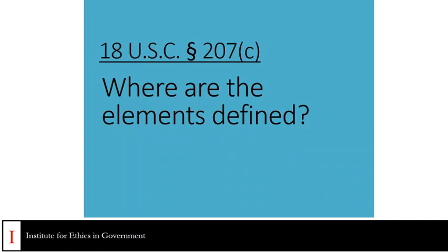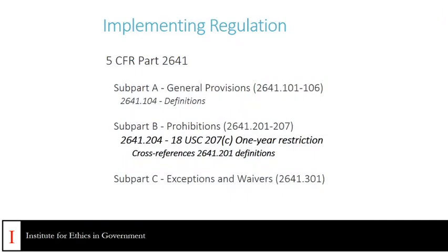Where are the 207C elements defined? The implementing regulation for 207 is 5 CFR Part 2641. The specific guidance on the application of the 207C restrictions is found at 2641.204, and there are also cross-references to various definitions in 2641.201.